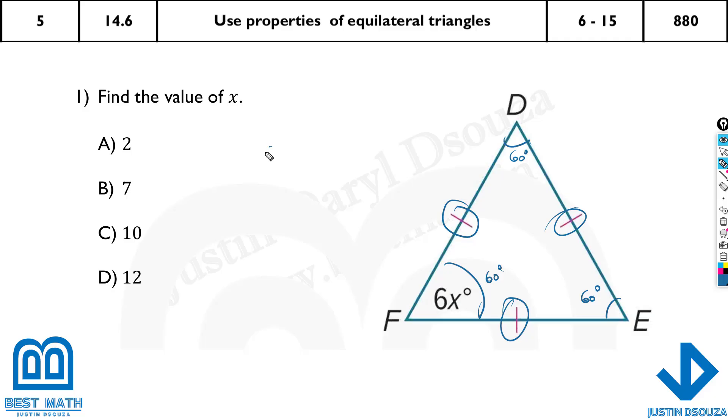Each side is 60 degrees. Now we have 6x over here, that means 60 degrees is equal to 6x. So let's divide both sides by 6. You will get 60 by 6, that is 10. This is the answer. That's option C.